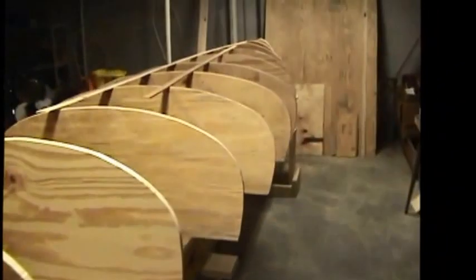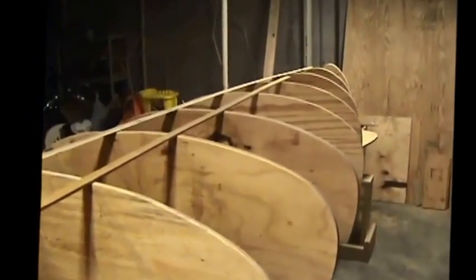In the last video I was doing lofting, and I was cutting out the stations after lofting them up using the numbers in the book Canoe Craft. This station that I worked on initially was station zero, which is in the middle.